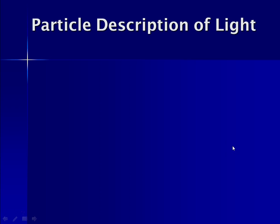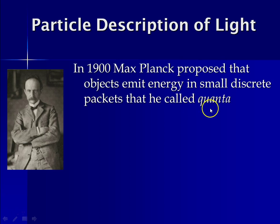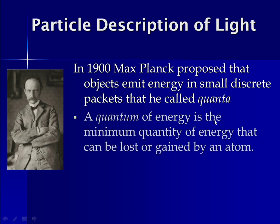So now we have to talk about the particle description of light. Because in the early 1900s, there were people who believed that light was a wave, and there were people emerging who believed that light behaved like particles. So in the early 1900s, Max Planck, and here's his picture, proposed that objects emit energy in small discrete packets that he called quanta. And so a quantum of energy is the minimum energy required for an atom to gain or lose any energy. So a quantum of energy is that minimum quantity that can be lost or gained by an atom.